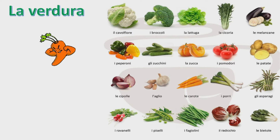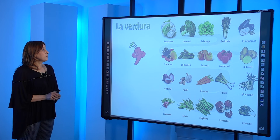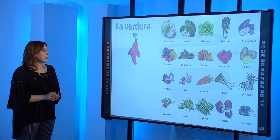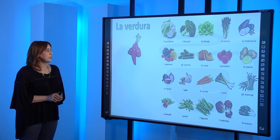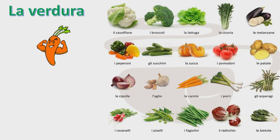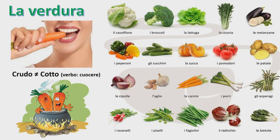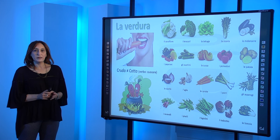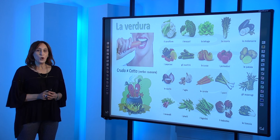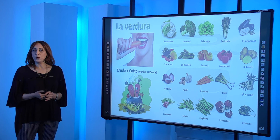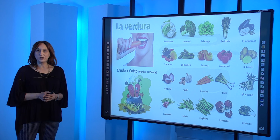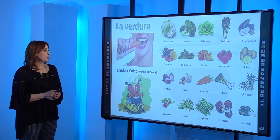Questa è la verdura. Vediamo alcuni nomi di verdura: il cavolfiore, i broccoli, la lattuga, con cui possiamo fare un'insalata. Anche lattuga, pomodori, cipolle, le carote. La verdura la possiamo mangiare cruda in un'insalata, per esempio, oppure cotta. Quindi la possiamo cuocere. La carota, per esempio, si mangia cruda oppure cotta.